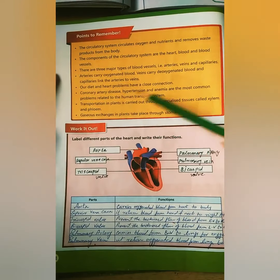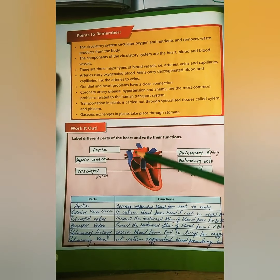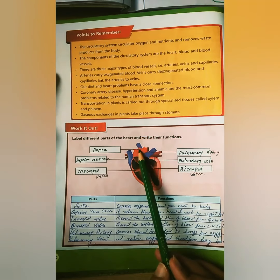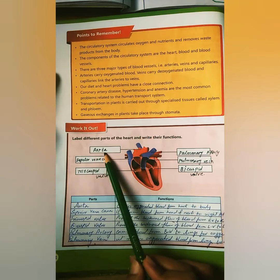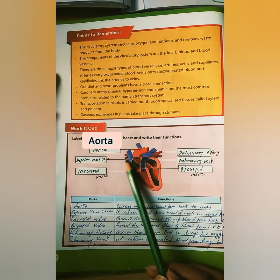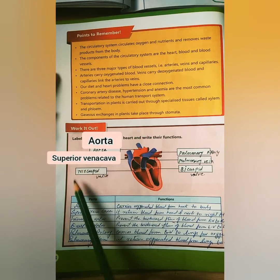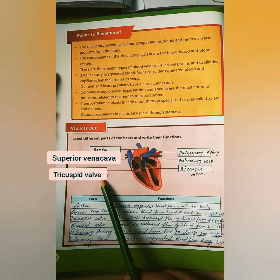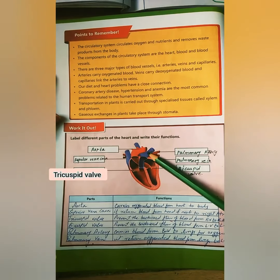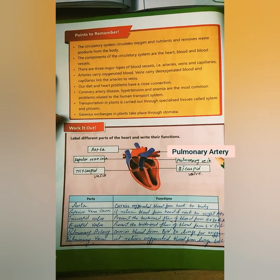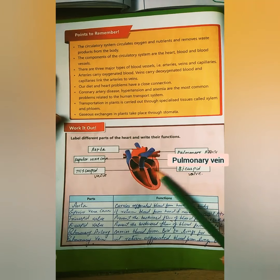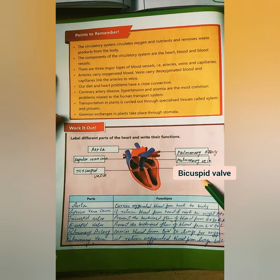There is a 'Work It Out' exercise asking us to label different parts of the heart and then write their functions. The parts to label include: the aorta, the superior vena cava, the tricuspid valve, the pulmonary artery (shown in blue), and the pulmonary vein.